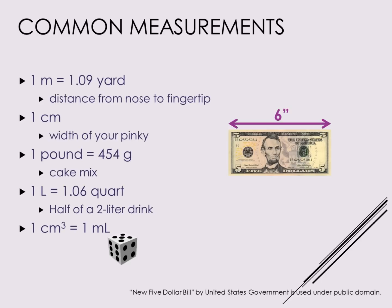One thing we talk about a lot when doing conversions is: does this answer make sense? Is it reasonable? If someone tells me they ran six kilometers and I do the conversion and get eight feet, that's clearly not right — that's not a reasonable conversion. So when doing problems we always want to ask whether our answer is reasonable. We need some basis for that, since we're not always used to the metric system, so having reference values can help us decide.